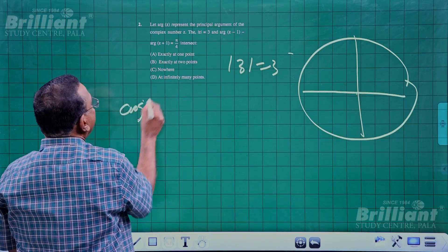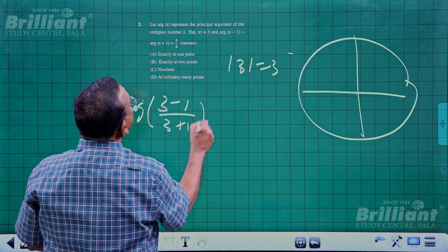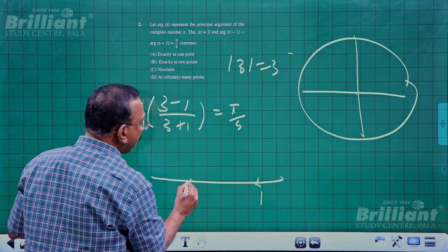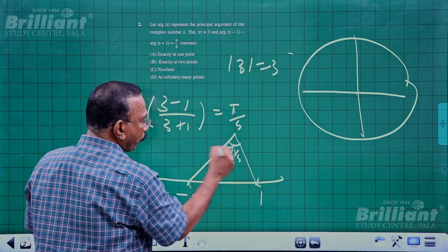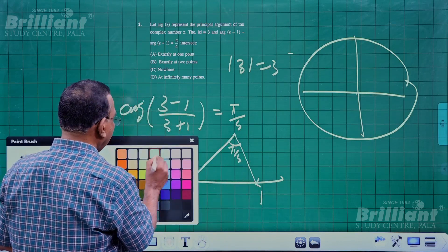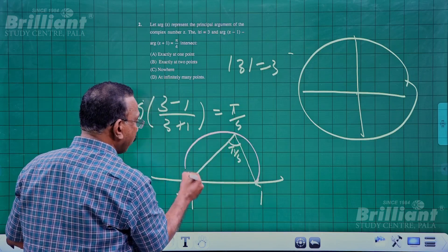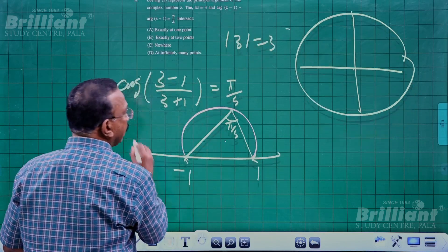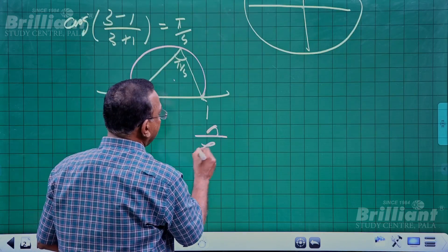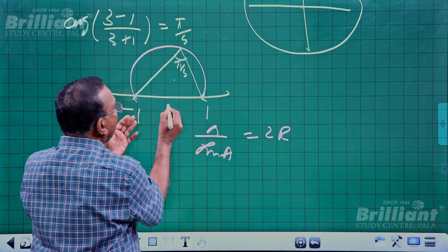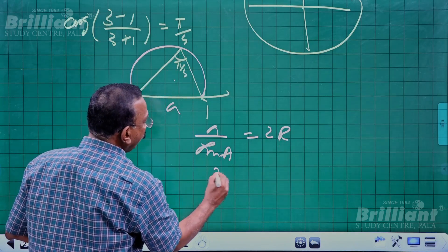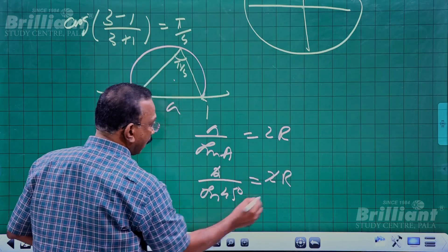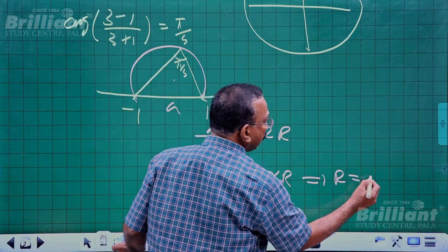Next, arg((z - 1)/(z + 1)) = π/4. The points are at ±1 on the real axis and the angle is π/4 or 45°. This locus is a part of a circle. Using the formula a/sin A = 2r with the chord of length 2 and angle π/4, we get r = 1/sin 45° = √2. So the locus is a circle of radius √2.